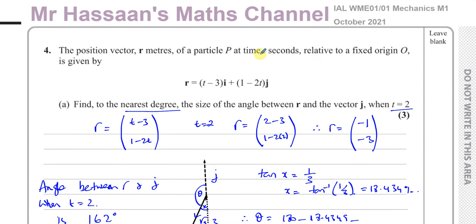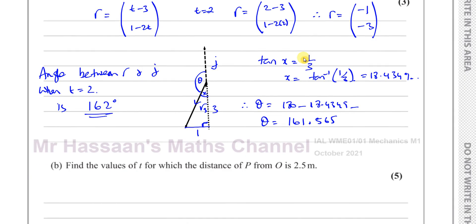So the position vector r is the vector that takes you from O to P. The position vector of particle P is OP, and that's equal to r, which equals (t minus 3, 1 minus 2t) in column vector form.